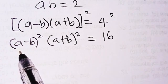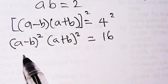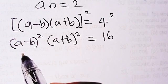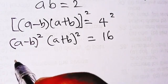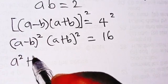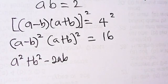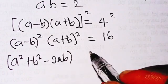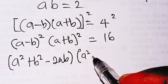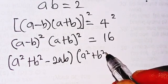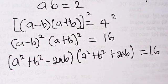Let me now expand each of these factors separately. This is a perfect square quadratic, so it can be expanded as a squared plus b squared minus 2ab. Then we have this one to be a squared plus b squared plus 2ab, then equals 16.